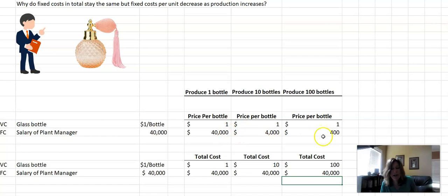It is the opposite for variable costs. In total, variable costs go up, but per unit, they stay the same. So let me know if you have any questions. Thanks.